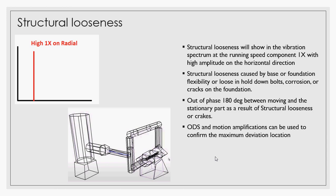You will see high amplitude 1X vibration on the radial direction, mostly in the horizontal direction because it is the most flexible direction. It can be caused by foundation flexibility, loose hold-down bolts, or corrosion cracks in the foundation or many other reasons.